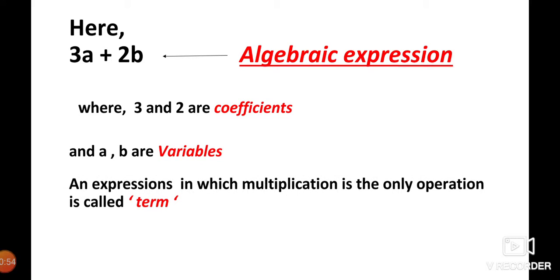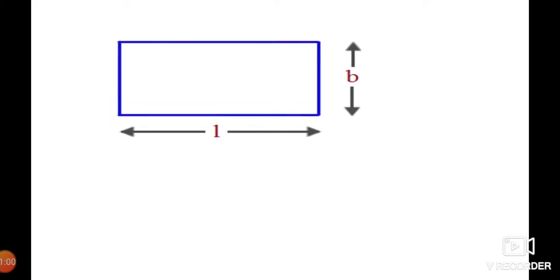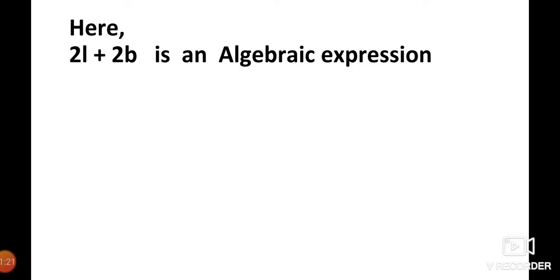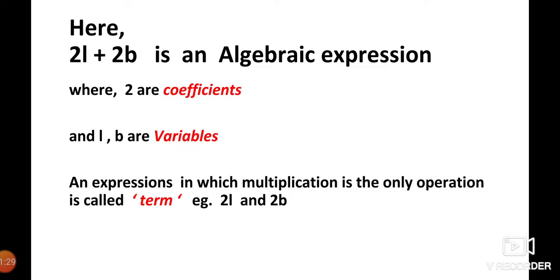In the above algebraic expression, 3a and 2b are known as terms. See another example — a rectangle is given with length l and breadth b. The formula for the perimeter of a rectangle is 2 × length + 2 × breadth. So the perimeter equals 2l + 2b, which is an algebraic expression where 2 is the coefficient, l and b are variables, and 2l and 2b are terms.